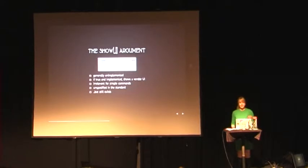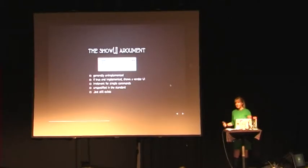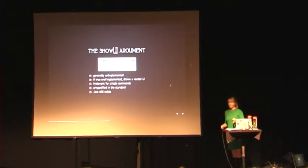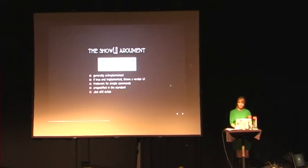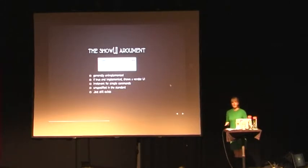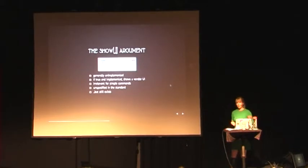ActiveX — yes, that's it. The second argument is show UI, which is a boolean. This is generally not implemented in most browsers. But if it is implemented and set to true, it shows a vendor UI — for example, in IE when you use the createLink command with true as the second argument and no value, it gives you a little window to put in a URL. You don't need this for simple commands like bold and italic, only for things that take a value. It's unspecified in the standard, but there's always a second argument, so if you want a third argument you have to include this one.